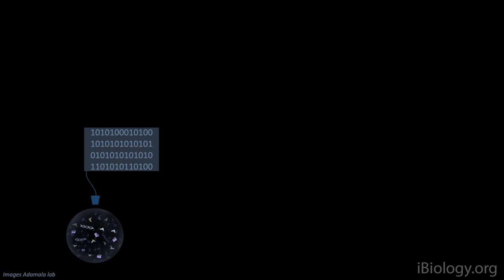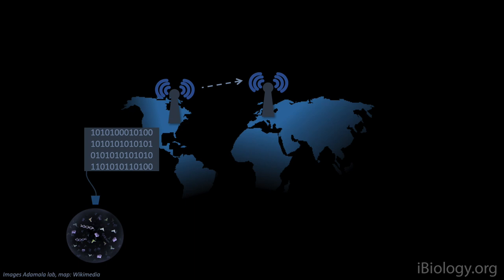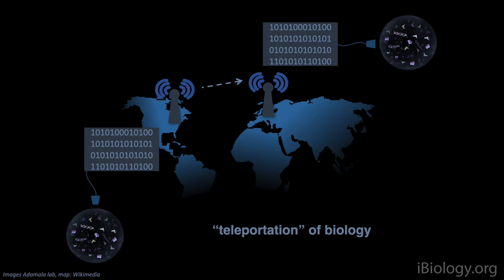Another advantage is that synthetic cells can be made according to a precise recipe, and if you have a recipe, you can digitize it. No complex living cell can be so completely described, because we don't know the composition of any other biological system as well as we know what goes into a synthetic cell. And digital information can be sent across large distances, so it's possible to send information about making a particular synthetic cell to a remote location, for example for making drugs on demand or vaccines.